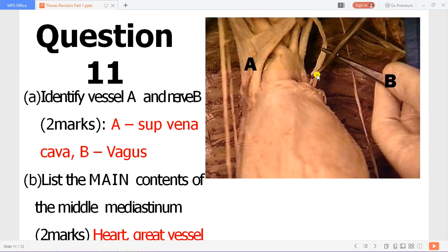You can appreciate vessels labeled A - this is the superior vena cava. You have the right and left brachiocephalic veins forming the superior vena cava. This is the arc of the aorta. You can appreciate the brachiocephalic trunk, the left common carotid and the left subclavian artery.